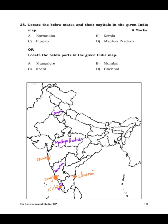Question 28: locate the below states and their capitals in the given India map. Karnataka — here is Karnataka on the map, and its capital is Bengaluru. Kerala — here is Kerala, and its capital is Thiruvananthapuram. Punjab — here is Punjab, and its capital is Chandigarh. Madhya Pradesh — here is Madhya Pradesh, and its capital is Bhopal.